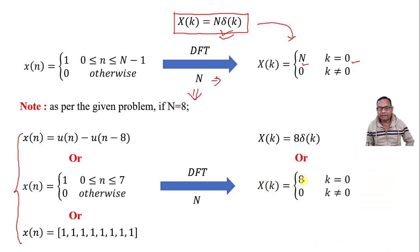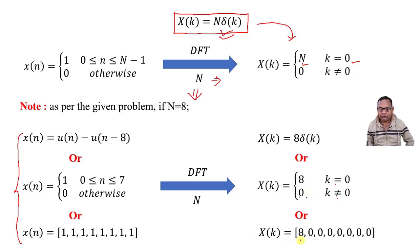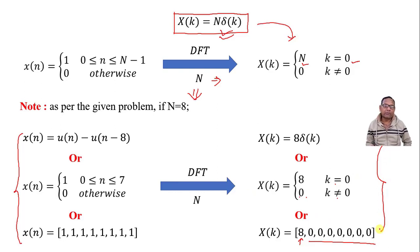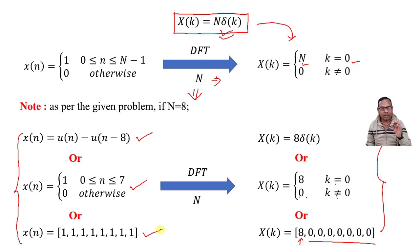The DFT can be written as N times X[k] — for N equals 8, the value at k equals 0 is 8, and all other values are 0. This problem may come to you in different formats: find the DFT of u[n] minus u[n minus 8], or of x[n] equals 1 for 0 to 7, or of 1 1 1 1 1 1 1 1. Simply, if the signal consists of ones in this manner, the answer is: the value equals the number of ones only at k equals 0, and all other values are 0.